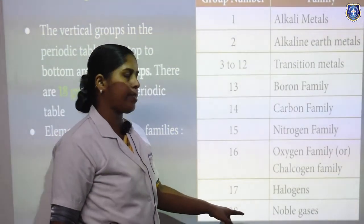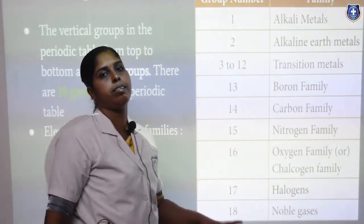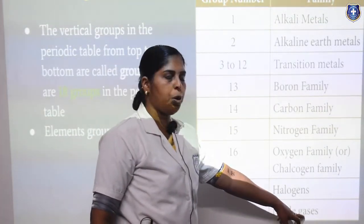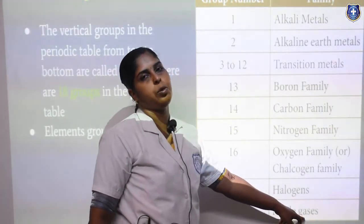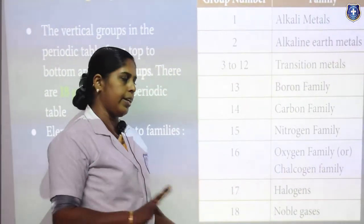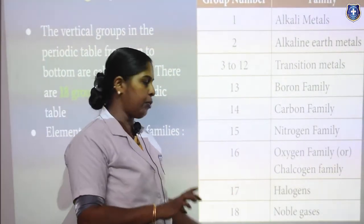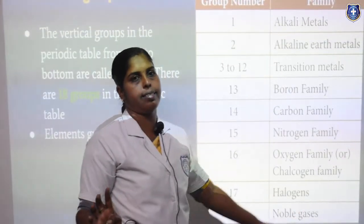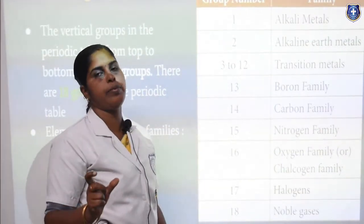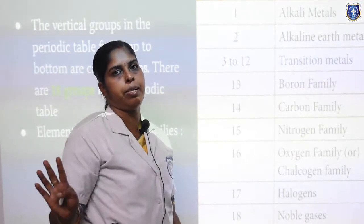The last group — the 18th group — is otherwise known as the zero group. These elements are known as noble gases or inert gases. Noble means there is no reaction. They are inert gases because they do not react with any other elements.